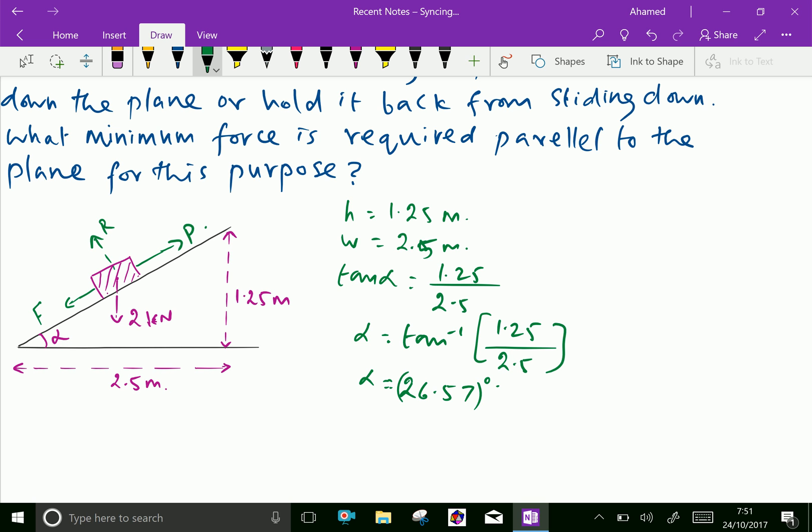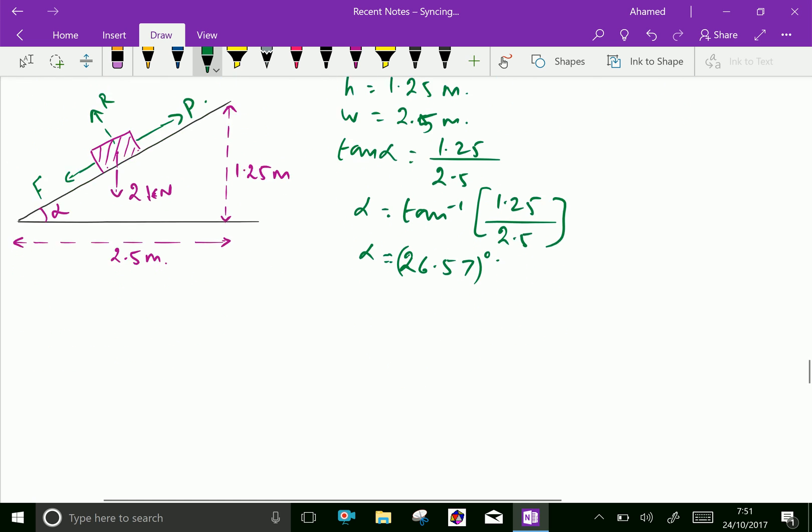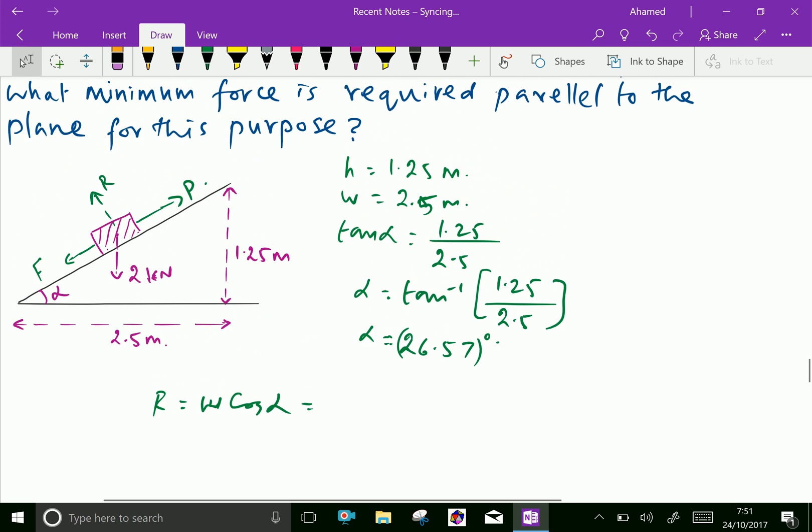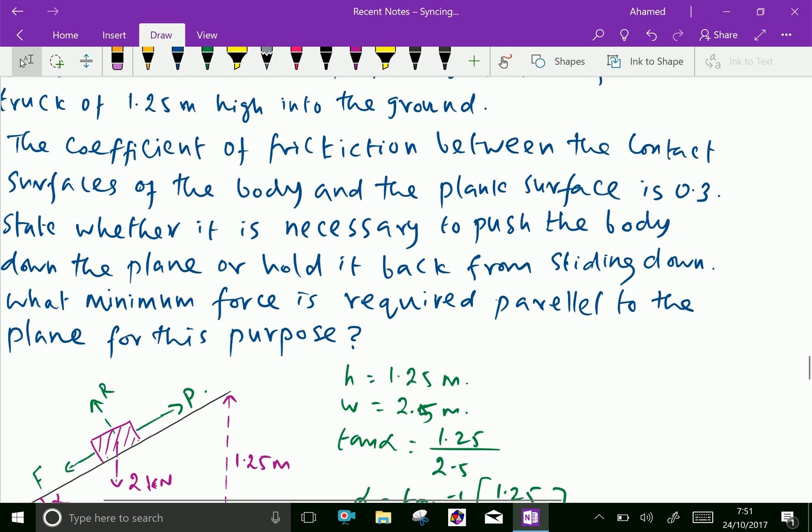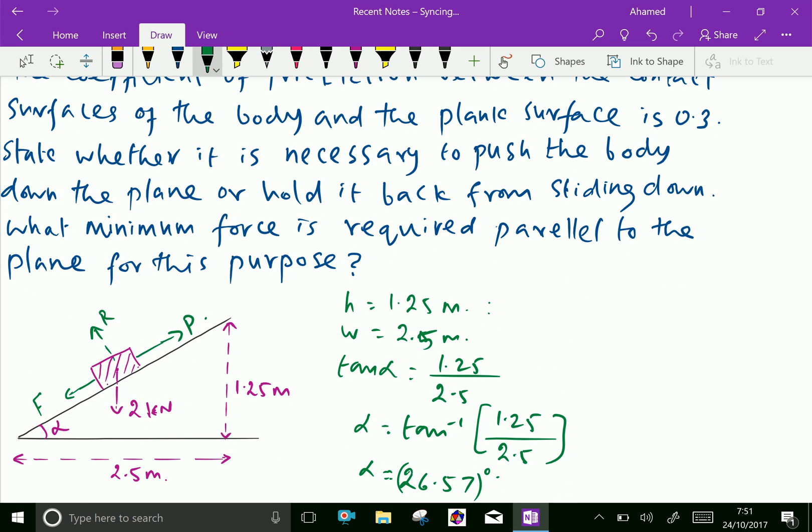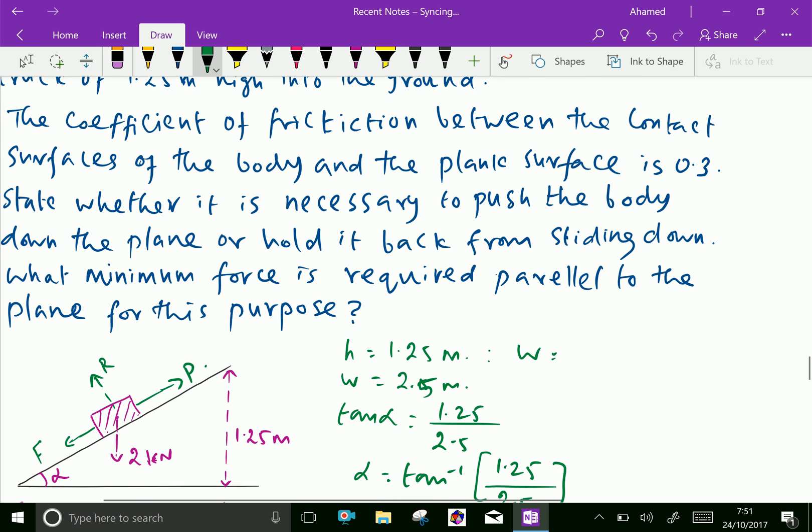Now normal reaction, resolving normal reaction, that means R equals W cos alpha, which is equal, W we have that is 2 kilonewton.